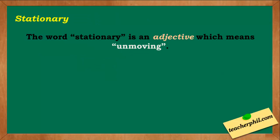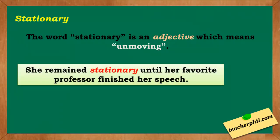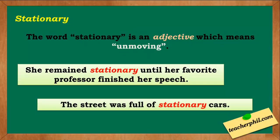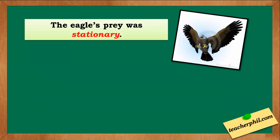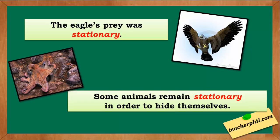Let's start with the first word: stationary with an A. The word stationary is an adjective which means unmoving. Examples: she remained stationary until her favorite professor finished her speech. The street was full of stationary cars. The eagle's prey was stationary. Some animals remained stationary in order to hide themselves.